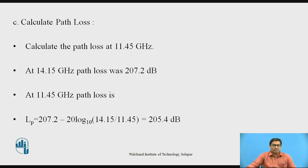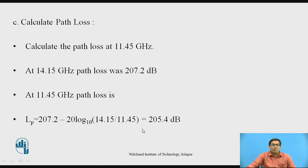Now we calculate the path loss at 11.45 GHz. We know the path loss at 14.15 GHz was 207.2 dB. From this, the path loss at 11.45 GHz is: Lp = 207.2 − 20 log₁₀(14.15/11.45). After calculation, we get path loss = 205.4 dB.